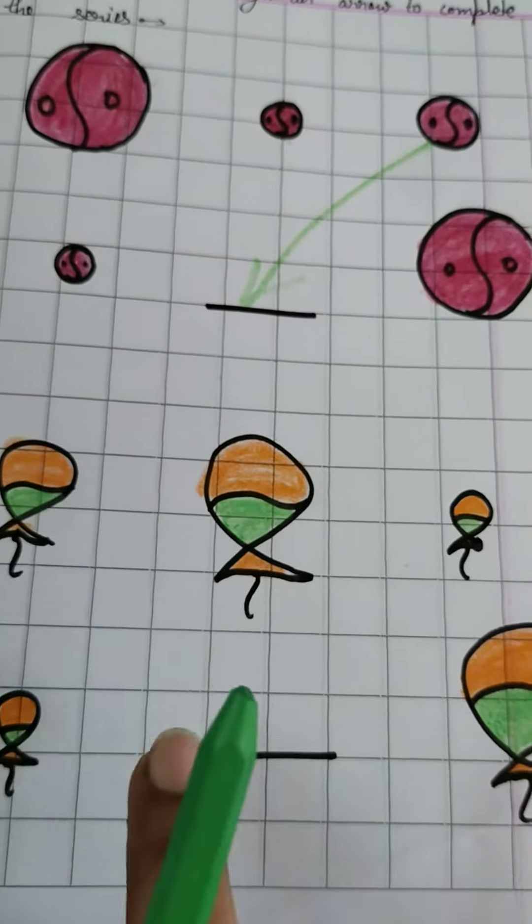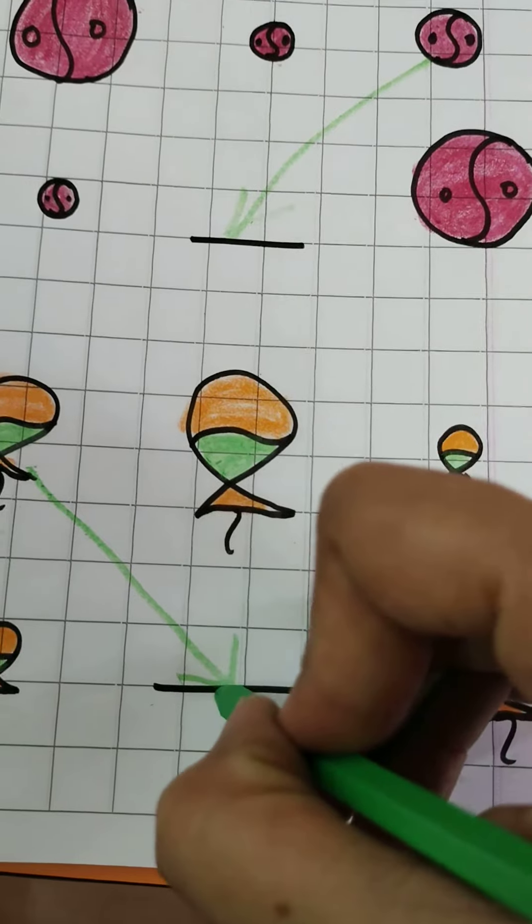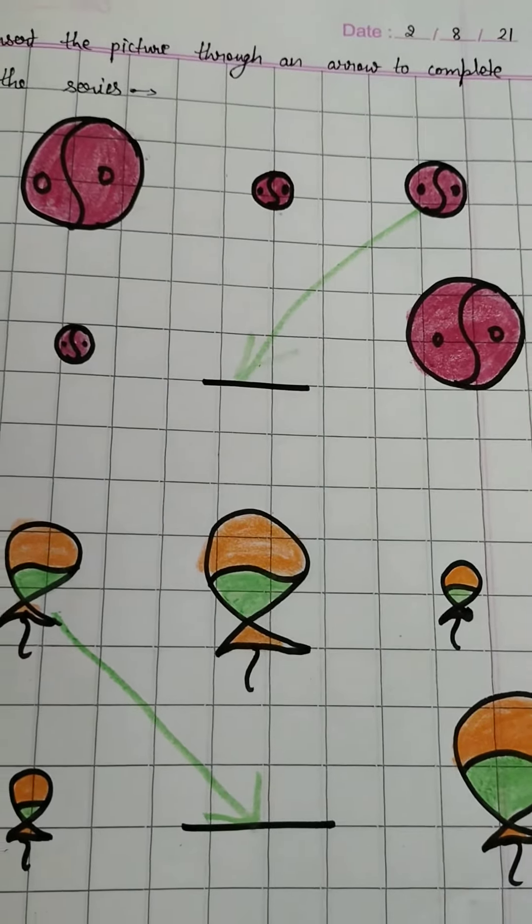Now this one is missing, medium size. So we will put this arrow here. This way we have to do our series.